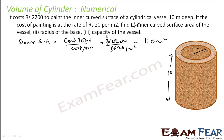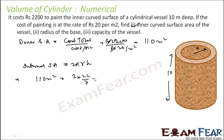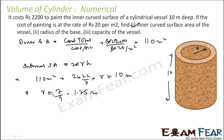For the second part, we find the radius of the base. Internal surface area = 2πrh, so 110 = 2 × 22/7 × r × 10. Solving this, we get r = 7/4 = 1.75 meter.